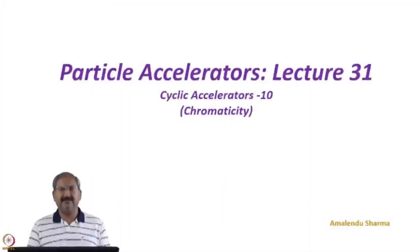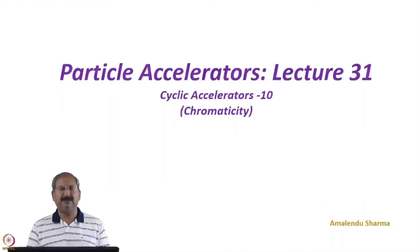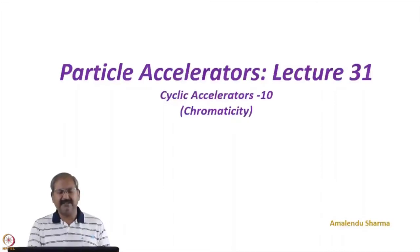In this lecture, we will discuss chromaticity. It is the effect generated by the quadrupole for off-momentum particles. In the last lecture, we saw the effect of a dipole magnet on the off-momentum particle and a new parameter, dispersion, was introduced. Now we will see how the quadrupole acts on the off-momentum particle, how this effect generates an aberration, and how that aberration can be corrected.